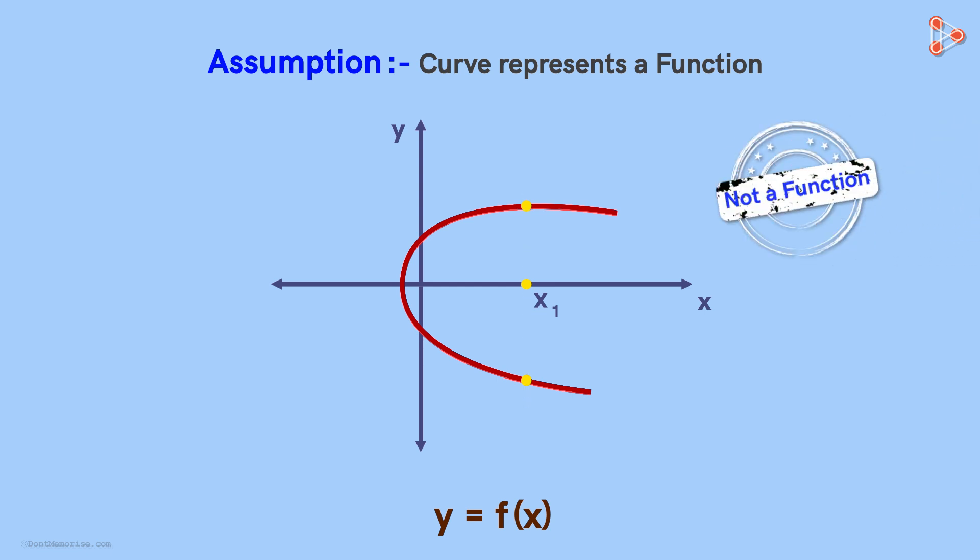We have seen that a function is a relation between two variables such that for each value of the independent variable, there is only one value of the dependent variable. But if we draw a line parallel to the Y axis here, we see that for one value of X, there are two values of Y. So this is not a function.